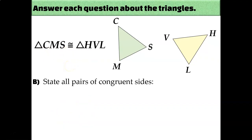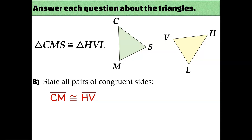We can also use the congruence statement to identify which pairs of sides are congruent. CM are the first two letters and HV are the first two letters, so those two sides must be congruent. M and S are the last two letters, V and L are the last two letters, so those sides must be congruent. And C and S are the first and last letters, and H and L are the first and last letters, so those two sides must be congruent.